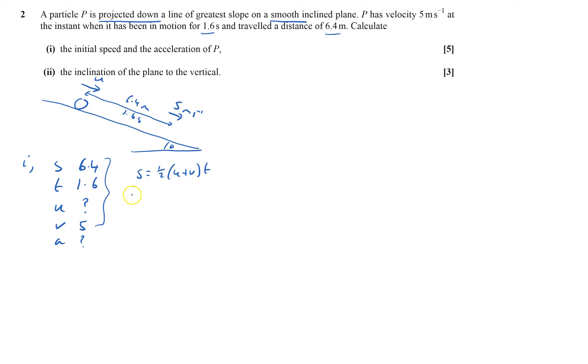Put them in there: 6.4 equals a half of u plus 5 times 1.6. So that will say 6.4 over 0.8 equals u plus 5, and so 8 equals u plus 5, and so u equals 3 meters per second.